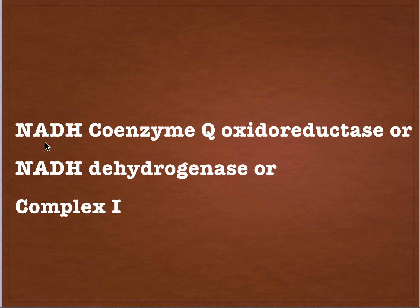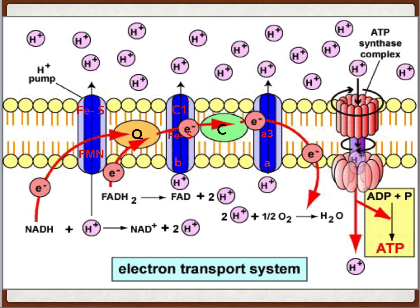Complex 1 is also called NADH coenzyme Q oxidoreductase. In complex 1, NADH is oxidized and releases two electrons, which are accepted by coenzyme Q via the FMN group and iron-sulfur cluster — hence the name oxidoreductase. As the electrons pass through this complex, four protons are pumped from the matrix into the intermembrane space.